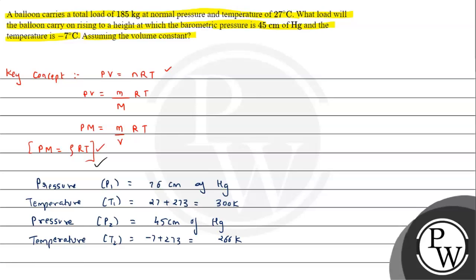From the situation given, using this result we can say P1 by P2 can be written as rho1 T1 upon rho2 T2. So rho1 upon rho2 will be equals to P1 T2 upon P2 T1. Since volume is constant, we can say m1 upon m2 will be equals to P1 T2 upon P2 T1. We are interested in calculating mass m2, so m2 can be written as m1 P2 T1 divided by P1 T2.